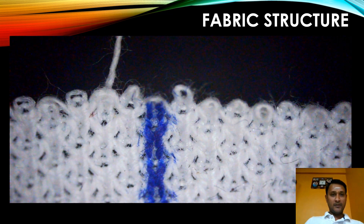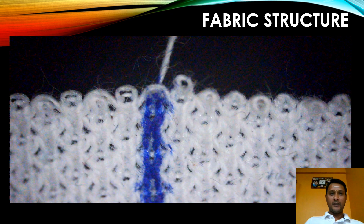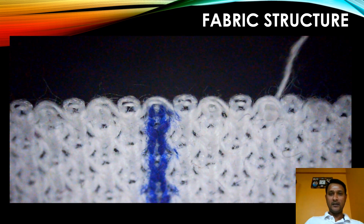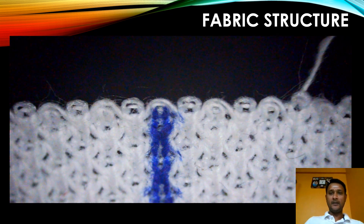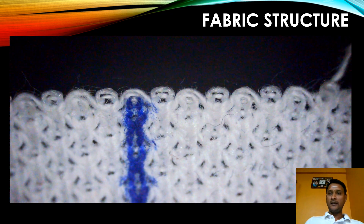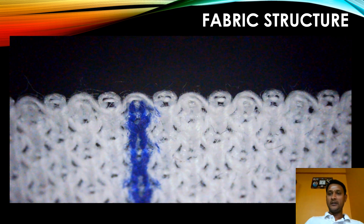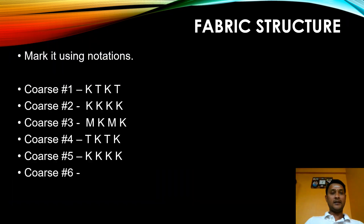In course number five, the complete loop is getting unraveled in each and every needle after that vertical line, so it is very easy to notate: knit-knit-knit-knit-knit. Now we are going to unravel course number six.